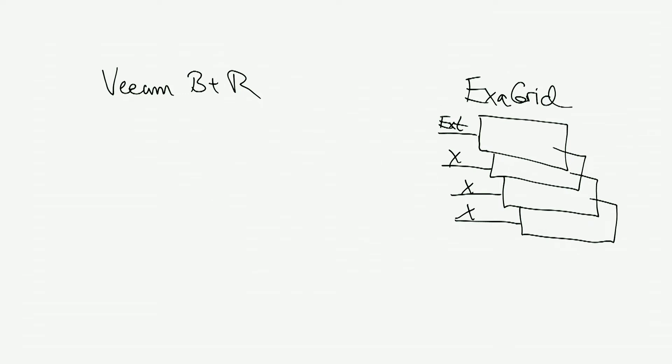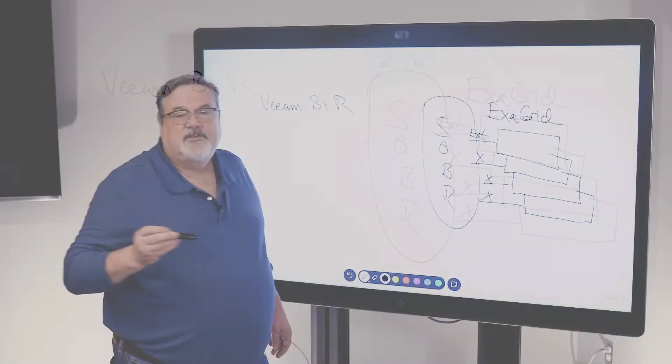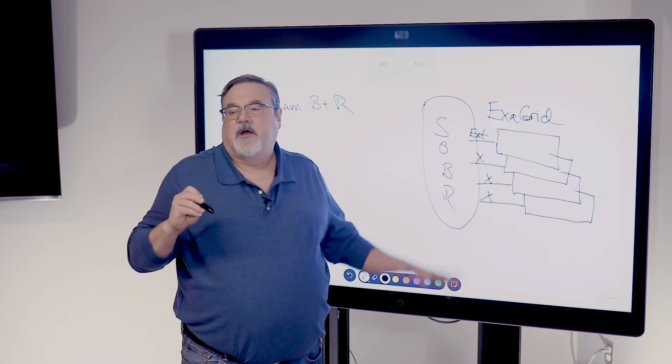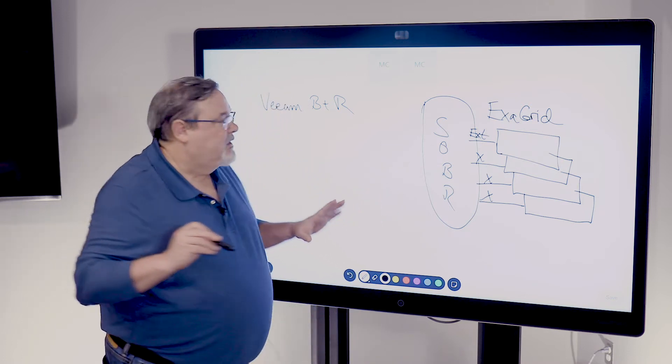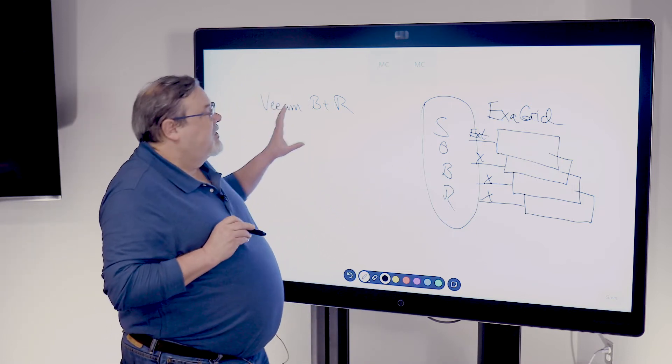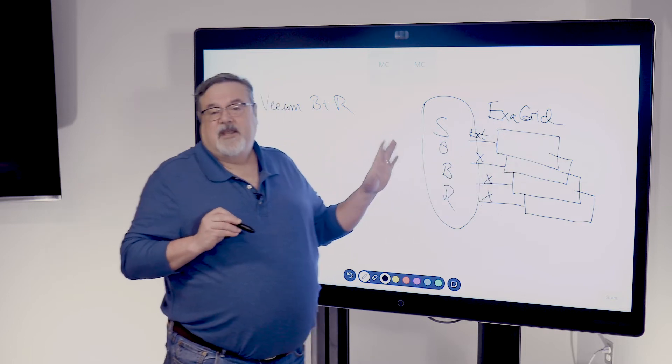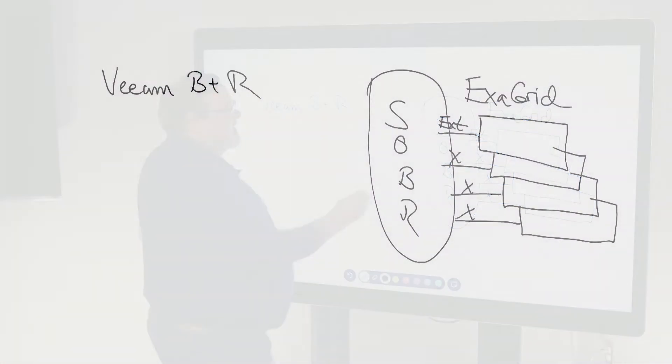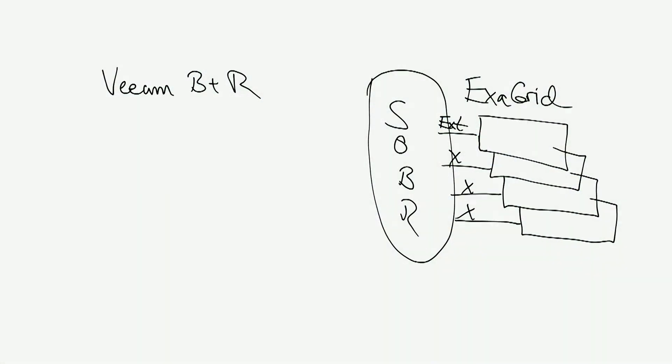Each one of these Exegrid servers is made visible to Veeam through an extent being configured for each one. I'll just draw these as Xs. And then in the Veeam backup and recovery configuration, all of these are put together into a large scale-out backup repository, which allows Veeam to make the decision about which Exegrid storage appliance a particular backup is sent to, relieving you of having to figure out which backup goes where. Veeam takes care of that, all courtesy of the scale-out backup repository configuration.